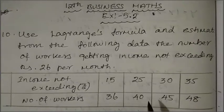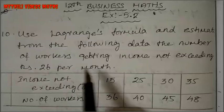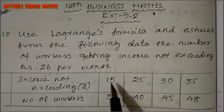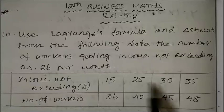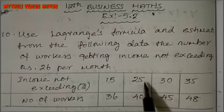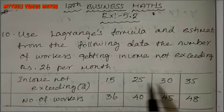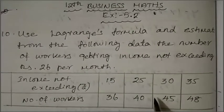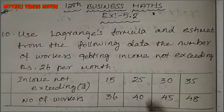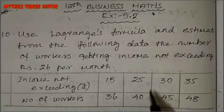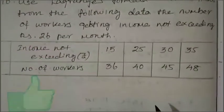We need to find the number of workers with income not exceeding rupees 26 per month. Since 26 lies between 25 and 30, we will apply Lagrange's interpolation formula.